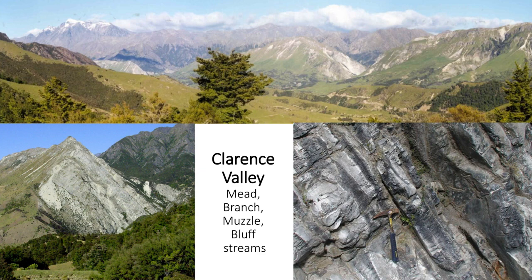There's a fourth suite of sections in the Clarence Valley in inland eastern Marlborough. Mead Stream is the one we've worked on most, and there's a series of sections going south — Branch Stream, Muzzle Stream, and Bluff Stream — all giving different records through the KT boundary that we'll talk about more later.